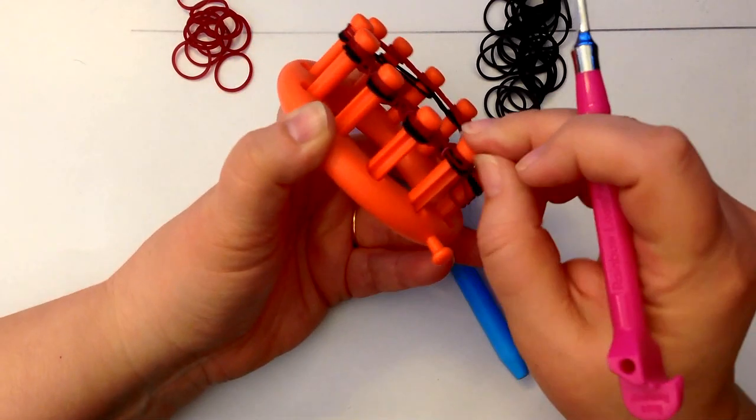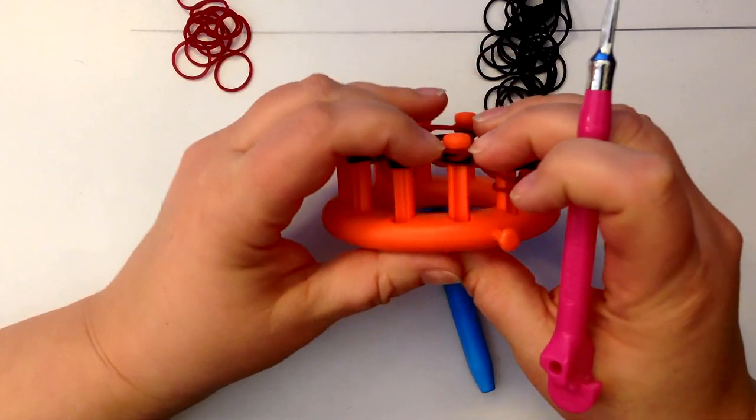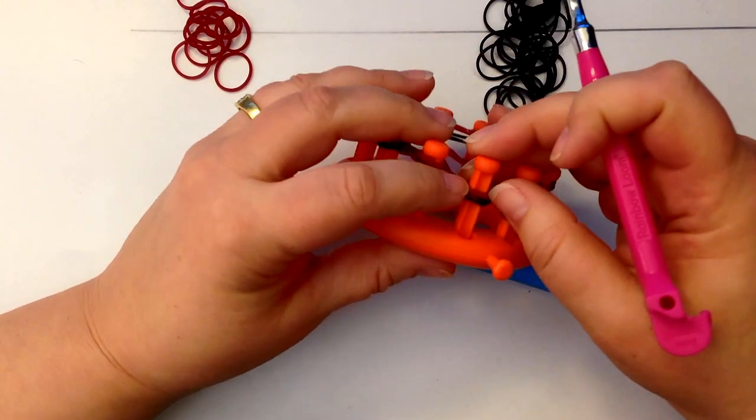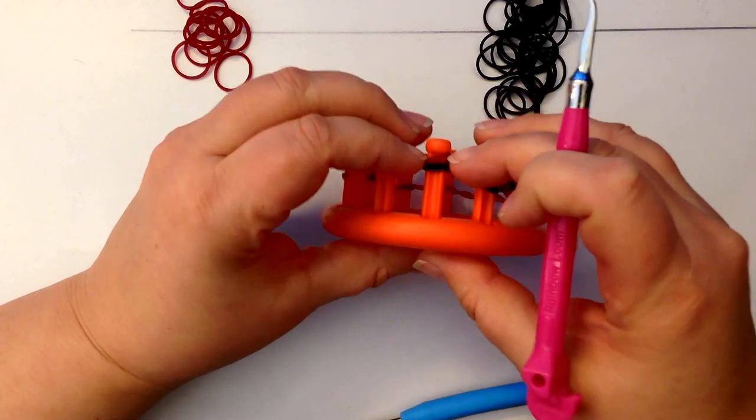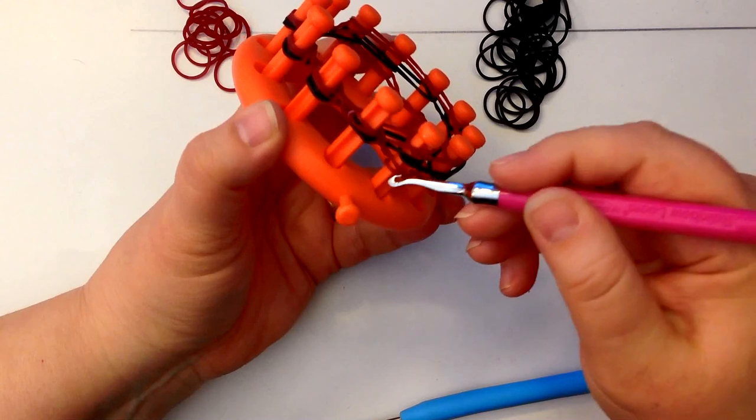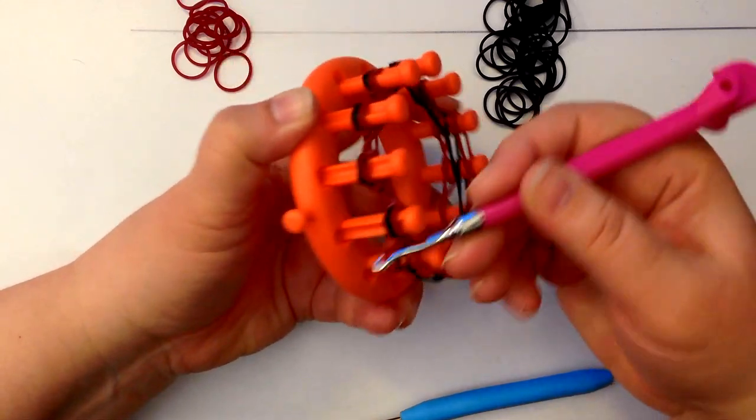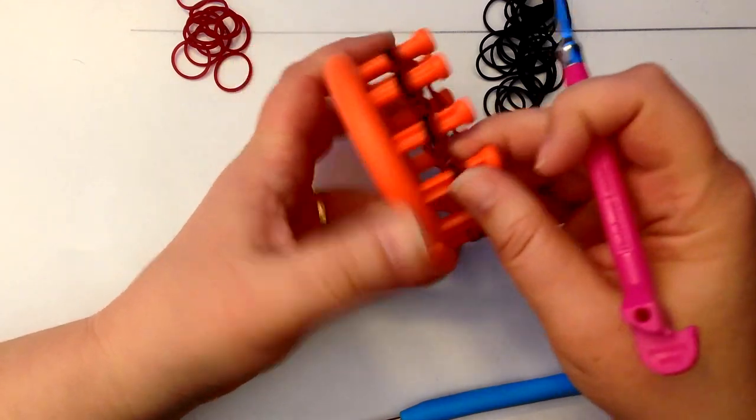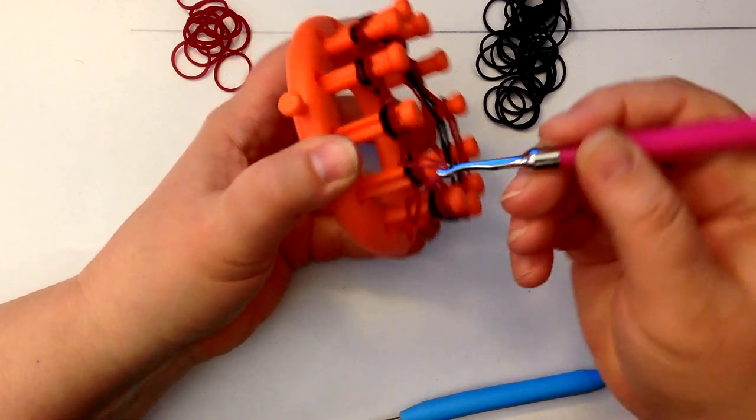If you don't get one of those, you can just use your normal hook. It works well as well. You want to make sure that your rounds are not messed up. You want the black as your bottom layer. The rainbow loom hook works especially well for this because it's got a nice deep hook to it.